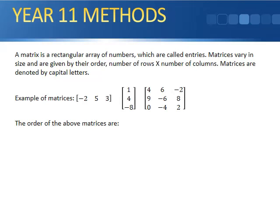A matrix is just a rectangular array of numbers, which are called entries. Matrices vary in size. They are given an order. Number of rows by number of columns is the order. We do not multiply these out. Very important. Matrices we denote by capital letters.